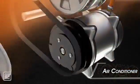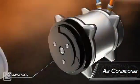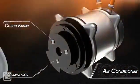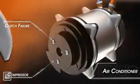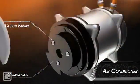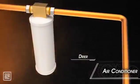The air conditioning system is pressurized by the condenser. It's driven by a belt on the compressor clutch. If the clutch fails, the compressor will not engage and the AC will not cool.